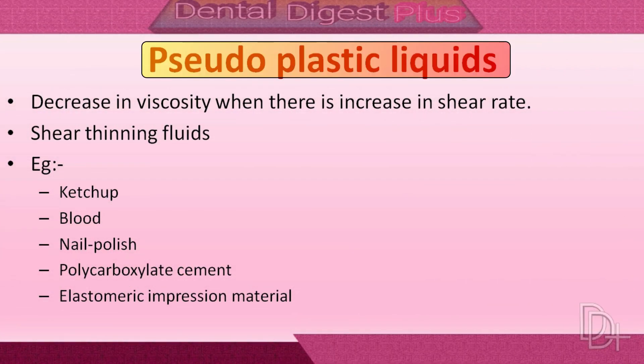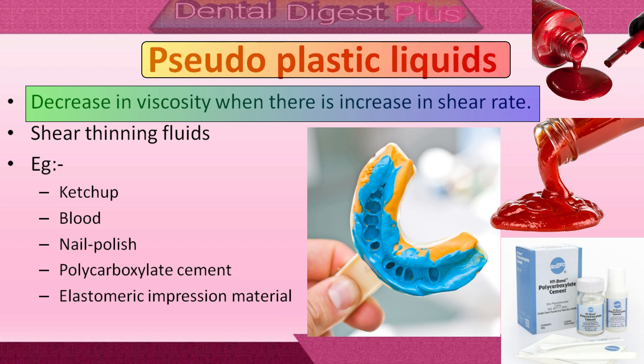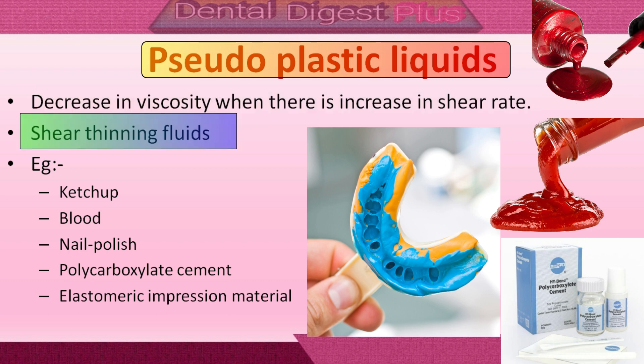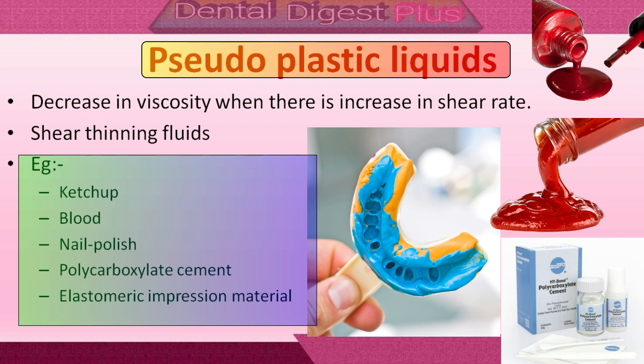Pseudoplastic liquids exhibit a decrease in viscosity when shear rate increases — they are shear-thinning fluids whose viscosity decreases with increasing strain rate until it reaches a nearly constant value. Examples include ketchup, blood, and nail polish. In dentistry, polycarboxylate cement and elastomeric impression materials are examples of pseudoplastic liquids.